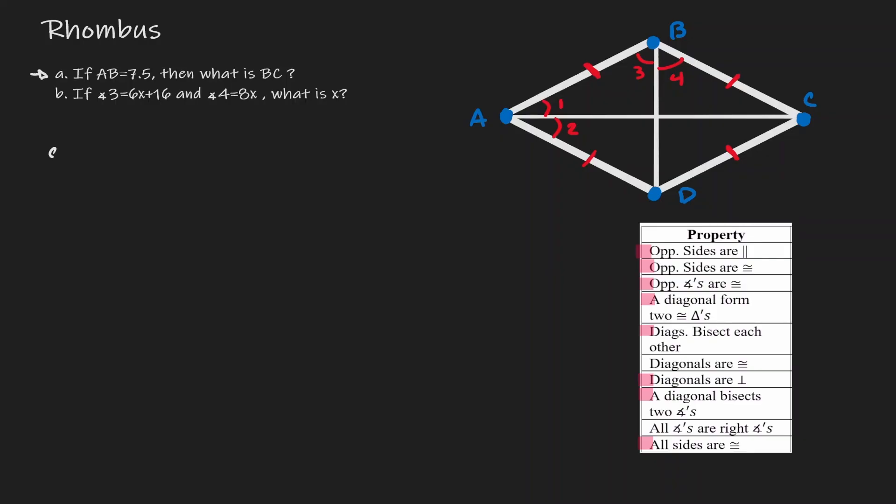Within this information, we know that AB is a value of 7.5, which we have it here. And what we want to find the value of is the length of BC, where BC we can find here.